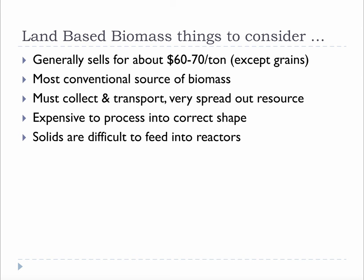When you think about land-based biomass, consider the following. It generally sells for about $60 to $70 a ton, except grains, which are far more expensive. It is the most conventional source of biomass. In order to use it, it must be collected and transported to a central location, because it is a very spread-out resource. It can be expensive to process into the correct shape, like lumber and wood chips. And because it is solid, it is difficult to feed into a chemical reactor — a challenge that the pulp and paper industry faces. Biomass, like coal, is a solid, and it is very challenging to turn into a liquid or a gas to be used for chemicals and fuels.